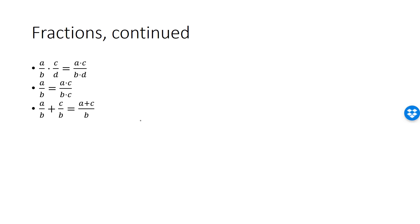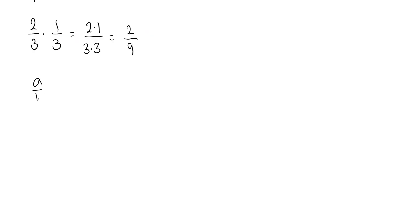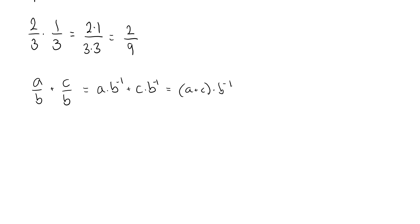Moving on to addition of fractions. If we have two fractions with the same denominator B, we can simply add the numerators: A over B plus C over B is A plus C over B. To see why: A over B plus C over B is, by definition of division, A times B inverse plus C times B inverse. By the right distributive law, this can be written as A plus C times B inverse, which by the definition of division is exactly A plus C over B.